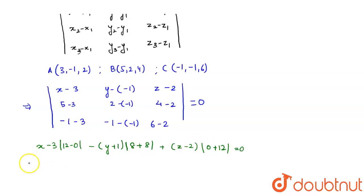So, what do I get? After solving this, I get 3(X-3) minus 4(Y+1) plus 3(X-2) is equal to 0.